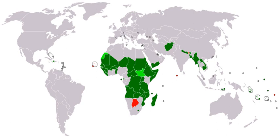The Sustainable Development Goals, by the United Nations, were set up to help overcome many of these problems. Development aid or development cooperation is financial aid given by governments and other agencies to support the economic, environmental, social and political development of developing countries.